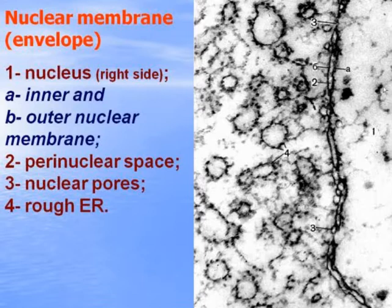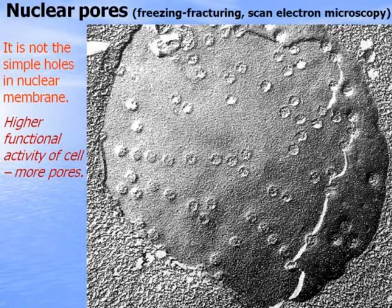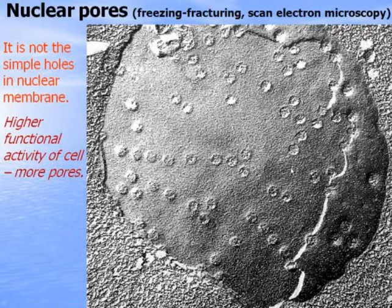The nuclear envelope has an inner biological membrane and an outer membrane, with a perinuclear space between. It contains rough endoplasmic reticulum. There are holes called pores in the nuclear envelope. Freeze-fracturing followed by scan electron microscopy shows the surface of the nuclear outer membrane is broken, and you can see the numerous nuclear pores like craters on the moon surface. The pores are not simple holes — there is something inside.